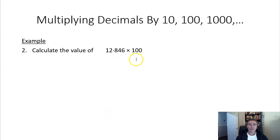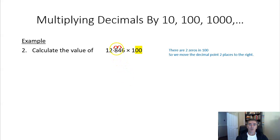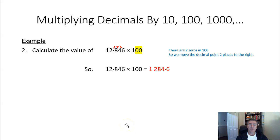So let's have a look at a quick example. 12.846 times 100. We notice that there are two zeros in 100, so we're going to move the decimal point two places to the right — one, two — from between the 2 and the 8, so now it's after the 4. So our answer is 1,284.6. We've moved the decimal point two places to the right because of those two zeros. Much quicker and easier.